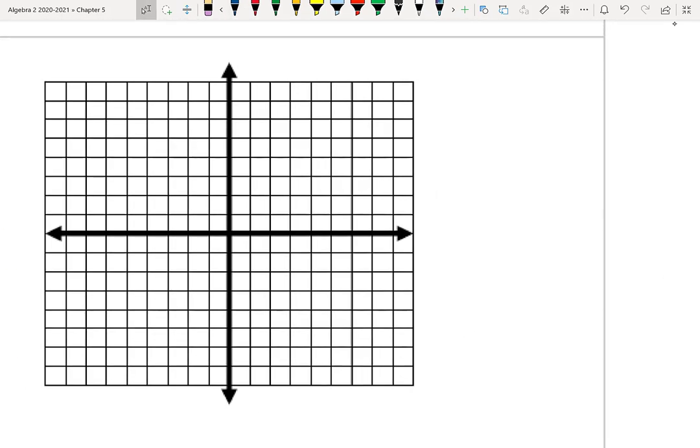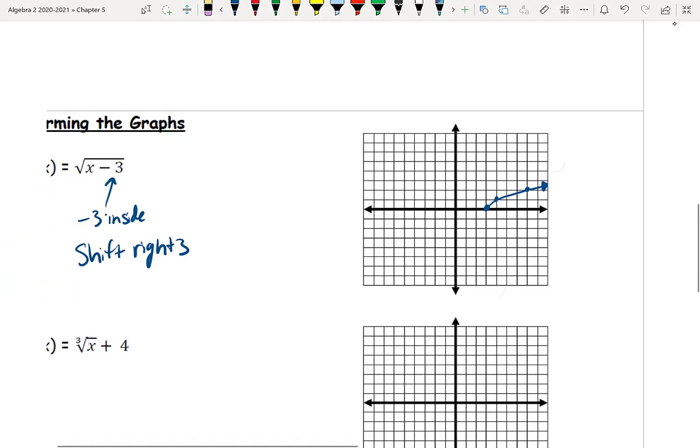Instead of starting at (0,0), we're going to start to the right 3, and then everything else follows the same pattern. So for our square root function, we can go our 1, 3, 5 shortcut. We're going up 1 over 1, up 1 over 3, up 1 over 5 would be off the graph. As long as we have those 3 points on here, I'm okay. As long as you've got your vertex and then 2 points to go off of so we know what the curve looks like, then that's all we need to do. That would be the entire graph we need for number 1.